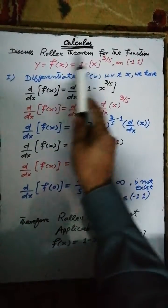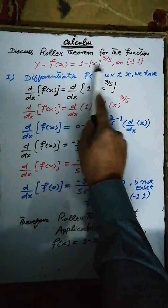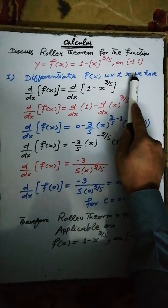Discuss Rolle's theorem for the function f(x) = 1 - x^(3/5) on the given closed interval from -1 to 1.